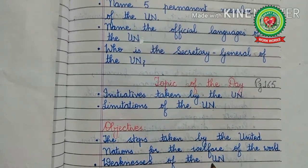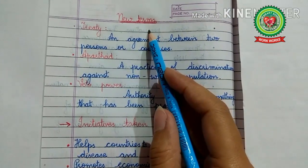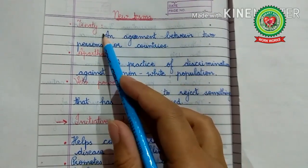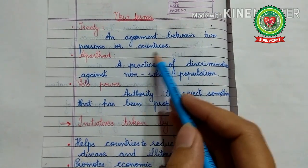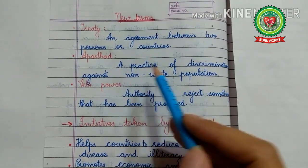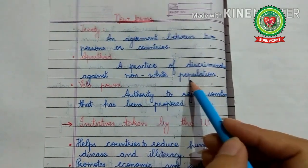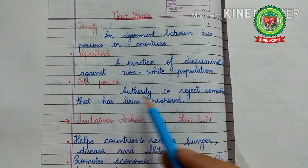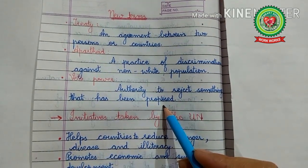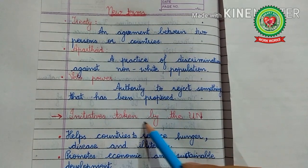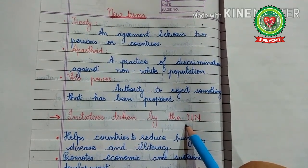Let us discuss the new terms related to today's topic. First is treaty — an agreement between two persons or countries. Second, apartheid — a practice of discrimination against non-white population. Third, veto power — the authority to reject something that has been proposed. Now let us discuss the initiatives taken by the United Nations.